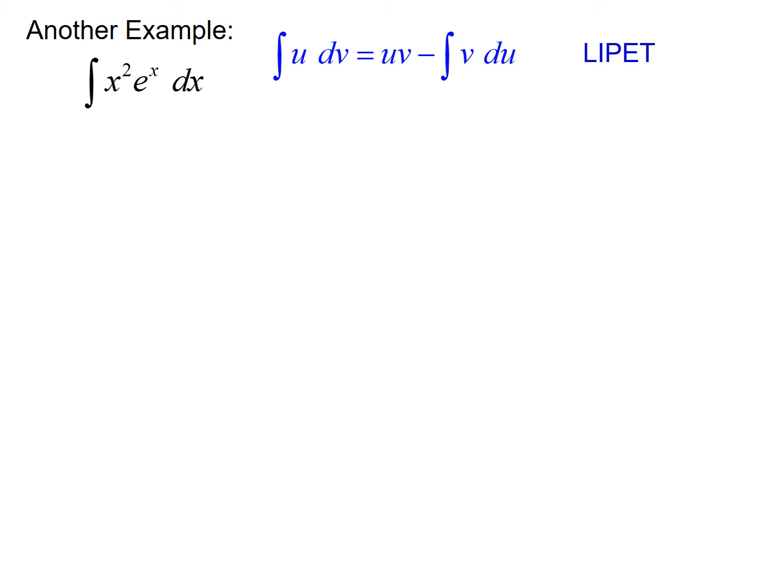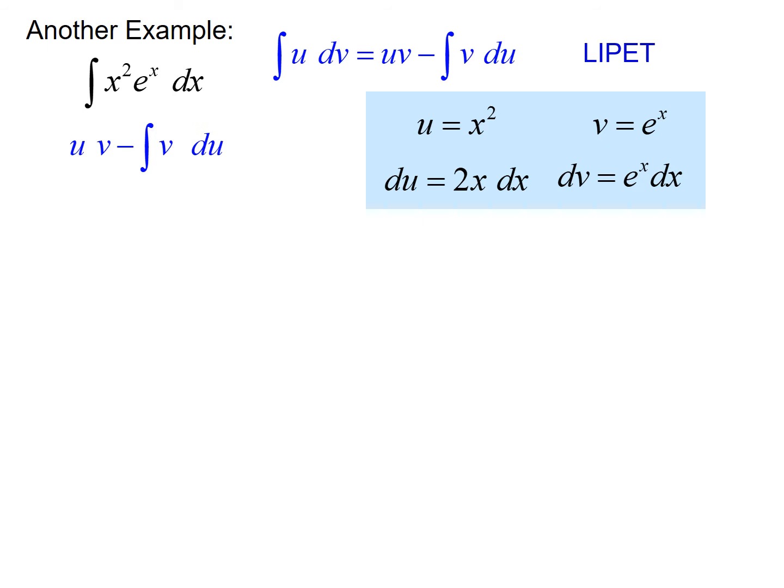If we go through LIPET here, there are no logs, no inverse trig, but x squared is a polynomial. So u equals x squared. dv is e to the x dx. We can find du and v and plug those into our formula. But we should notice here, once we simplify things down a little bit, we can pull out that constant 2. This integral of x e to the x is still not one that we can evaluate directly, so we need to go through integration by parts again.